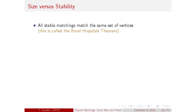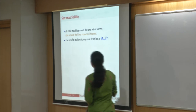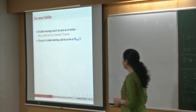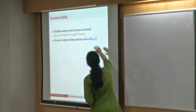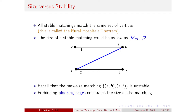In the parameter of matching size, stable matchings are probably not so good. It is an interesting result that all stable matchings — though there could be an exponential number — have the same size, and in fact leave the same set of vertices matched and unmatched. This is commonly called the rural hospital's theorem. The size of a stable matching could be as low as half the size of a maximum cardinality matching. The constraint of no blocking edge causes the matching size to suffer.